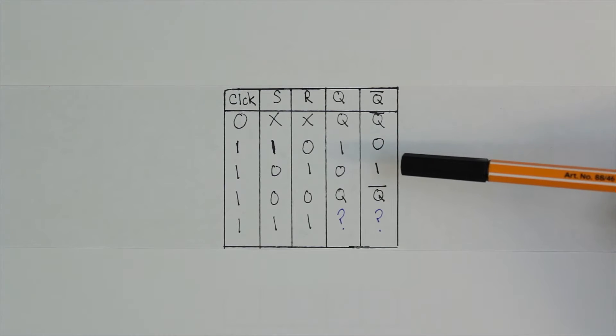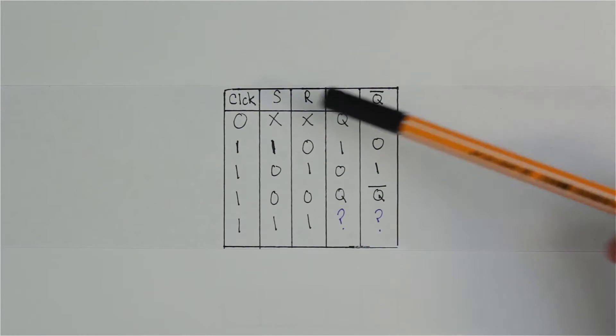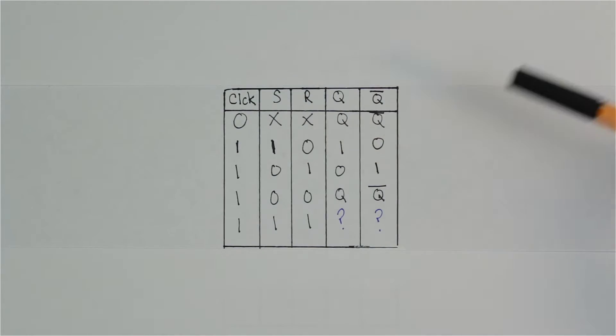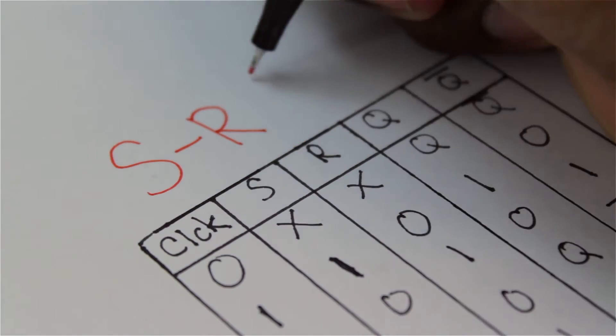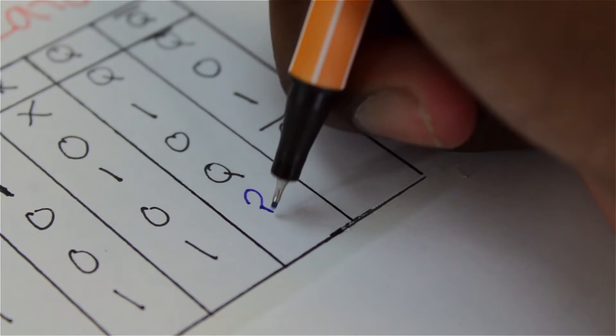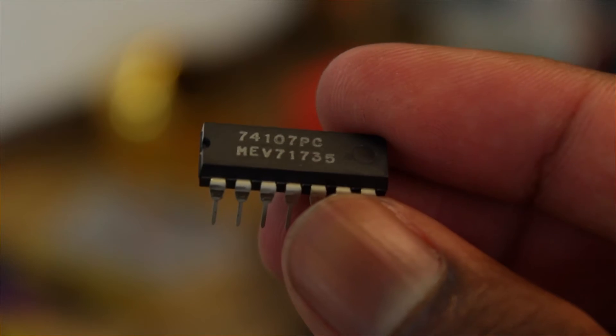If you've been following the series, you should recognize this truth table. If not, maybe the S and the R will give you a hint. It's an SR latch. Remember that when both the set and reset pins are high, the output goes into this undefined state.